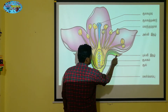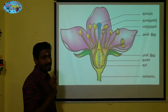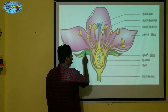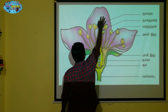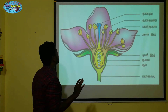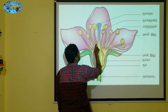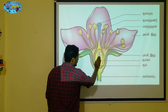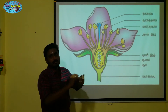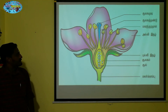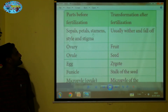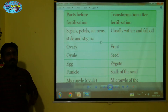This is the calyx, this is the corolla — which also includes petals. This is the stamen. It's the style, and it's the stigma. After fertilization, these parts wither and fall off. That is the first point about sepals, petals, stamen, style, and stigma.